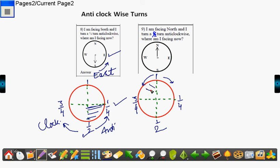So anti-clockwise means here. I am covering this much distance. So where do I reach? I travel from here to here and I reach south.